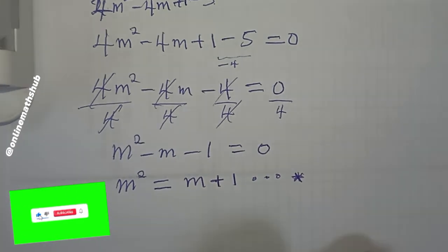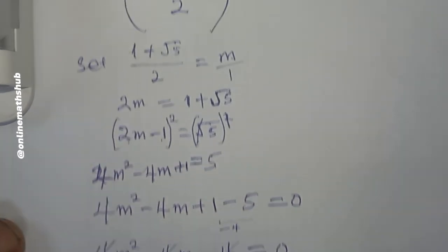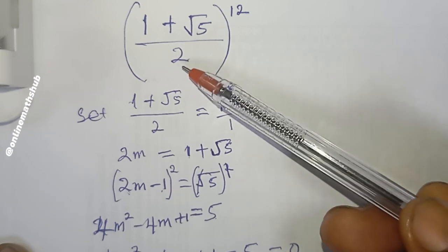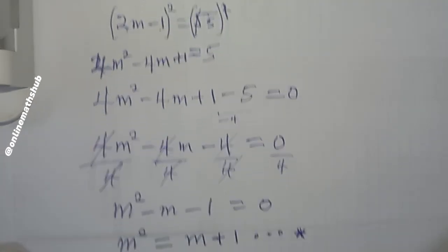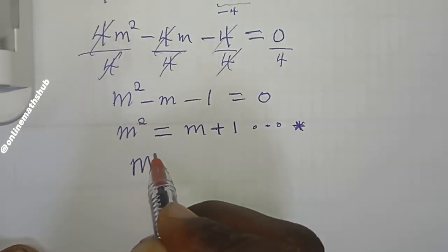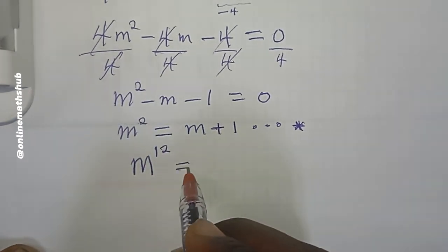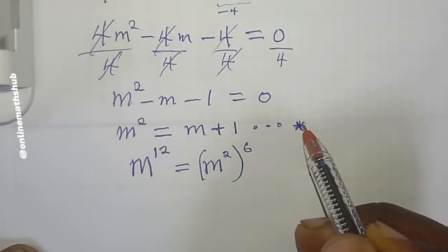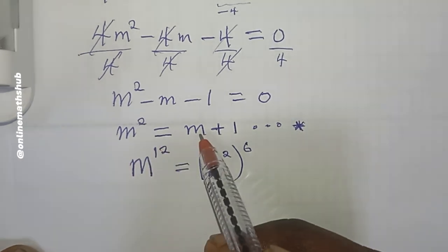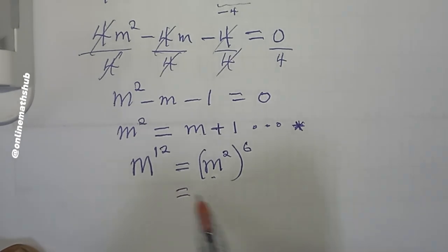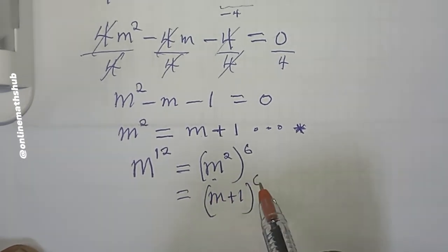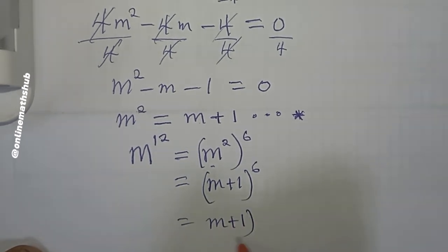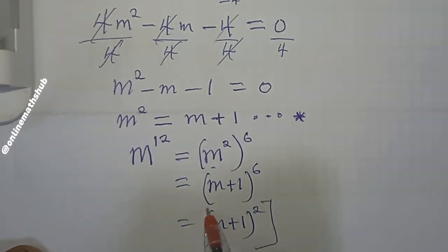Going back to the original equation, we set the expression equal to m, so we now have m^12. I can write m^12 as (m²)^6. From the starred result, m² = m + 1, so I replace m² with (m + 1), giving (m + 1)^6.